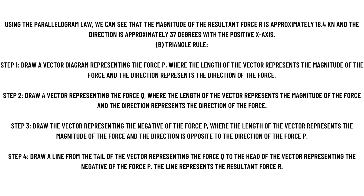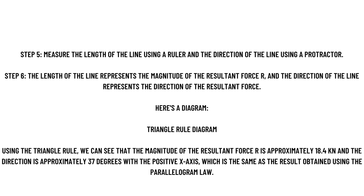Step 4: draw a line from the tail of the vector representing force Q to the head of the vector representing the negative of force P. This line represents the resultant force R. Step 5: measure the length of the line using a ruler and the direction using a protractor. Step 6: the length of the line represents the magnitude of the resultant force R and the direction of the line represents the direction of the resultant force R.